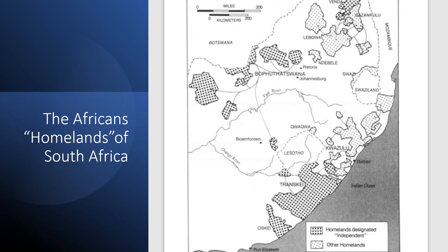The government relocated African squatters from unauthorized camps near cities. Those who were employed were placed in segregated townships, while the rest were either sent to the homelands or to farms where their labor was required by white owners. Additionally, the government initiated the eradication of what they called 'black spots' in rural areas — land owned or occupied by Africans within white regions. As white farming increasingly became commercialized and mechanized, Africans lost their remaining land rights on white farms, rendering many of them irrelevant to the labor needs of farmers.